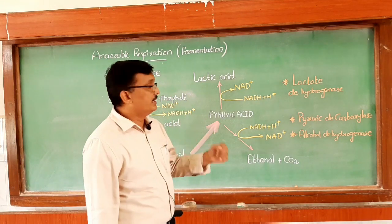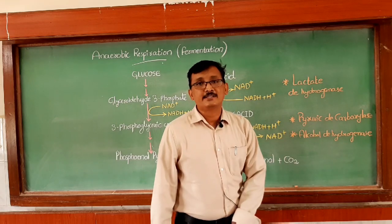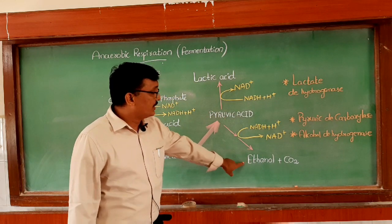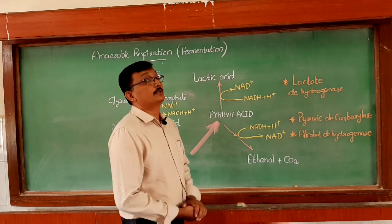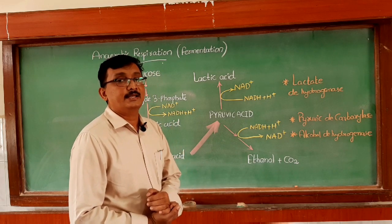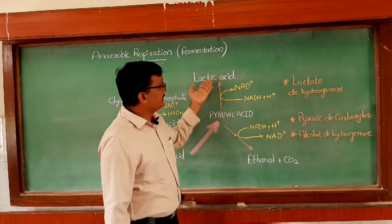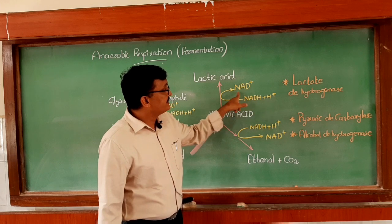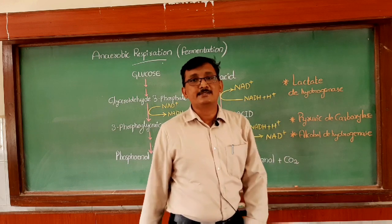Two enzymes are very important here: pyruvic decarboxylase and alcohol dehydrogenase are the two main enzymes which help in the conversion of pyruvic acid to ethanol. In some other microorganisms, and also in muscles — whenever we are doing vigorous exercise — lactic acid is formed. Pyruvic acid converts into lactic acid, which is also partial oxidation. Here also NADH+H+ is utilized, and the enzyme involved is lactate dehydrogenase.